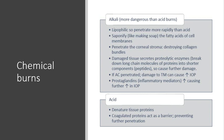Damaged tissue secretes proteolytic enzymes, which break down long chain molecules of proteins into shorter components, causing further damage — essentially a constant breaking down of cells at the corneal level. If the anterior chamber is penetrated by a chemical burn, it can cause damage to the trabecular meshwork, which leads to an increase in intraocular pressure. Prostaglandins found in the eye are inflammatory mediators, and they increase as a result of damage to the anterior chamber, causing a further increase in intraocular pressure — and it becomes quite dangerous at that point.